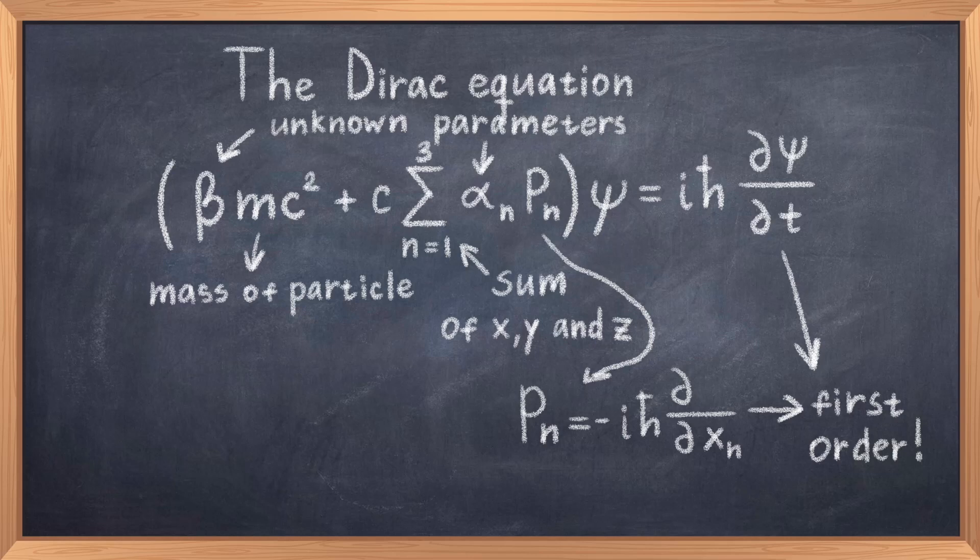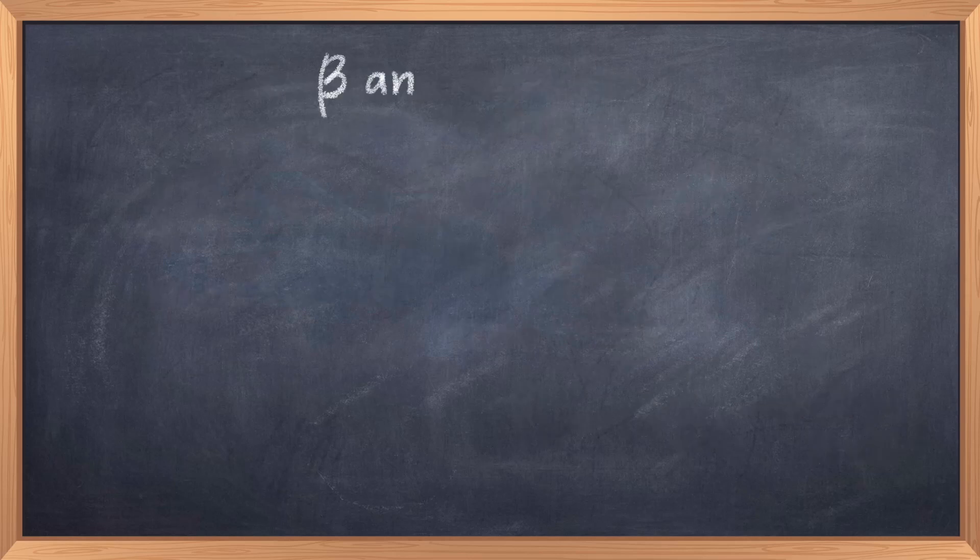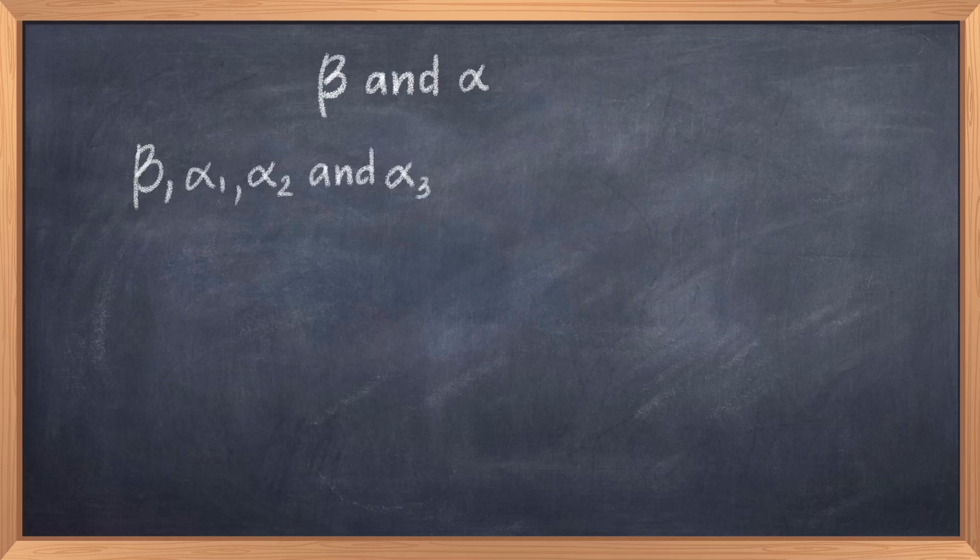And this was the original proposal by Dirac, and thus the original Dirac equation. But we still didn't really solve the problem, because we didn't figure out what the values of beta and alpha should be for this to work. It turns out that these two parameters are the magic that makes this equation work for fermions.